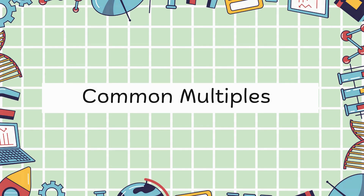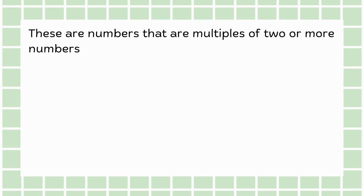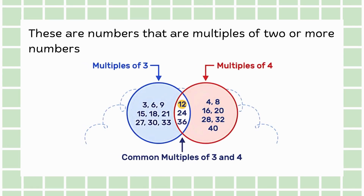Common multiples are numbers that are multiples of two or more numbers. For example, the multiples of 3 are 3, 6, 9, 12 and so on. Similarly, the multiples of 4 include 4, 8, 12, 16, 20 and so on. When we look for common multiples of 3 and 4, we find numbers that appear in both lists, like 12, 24 and so forth.